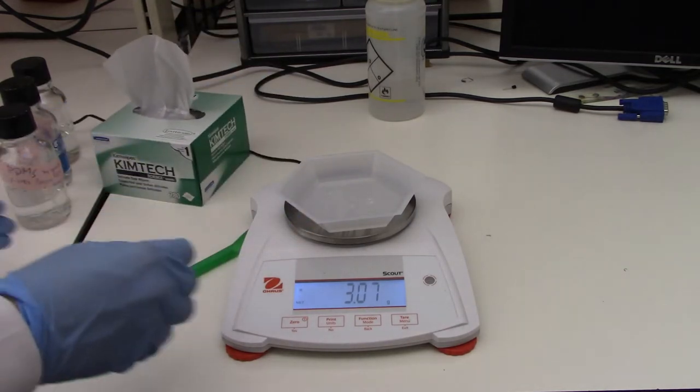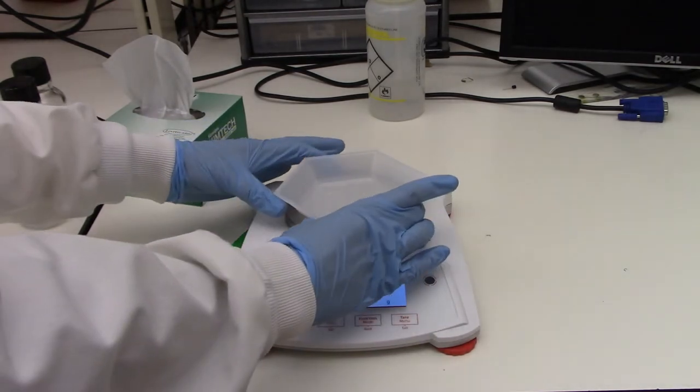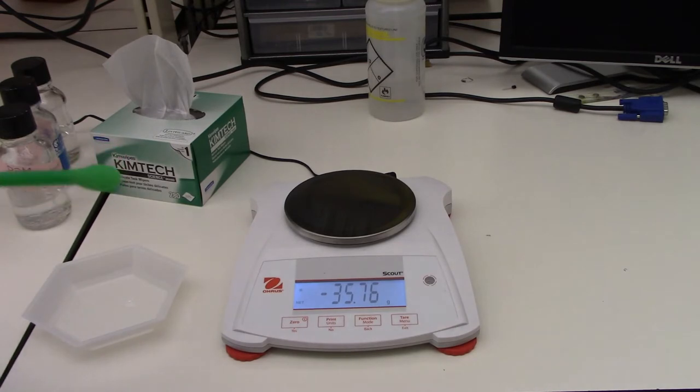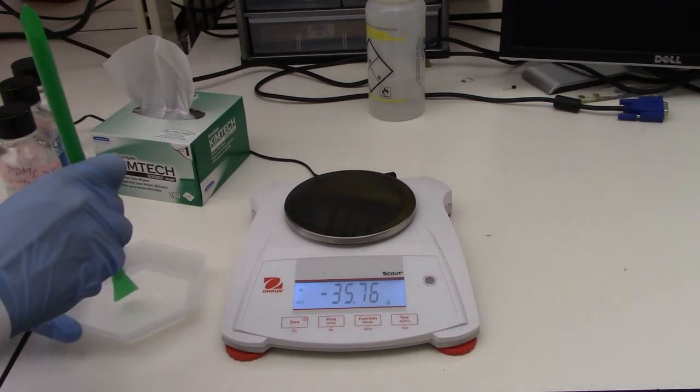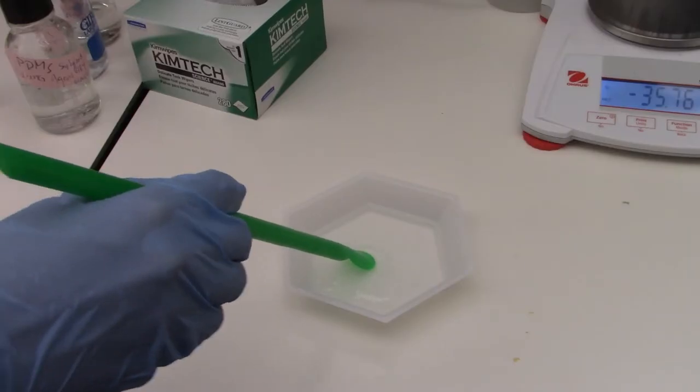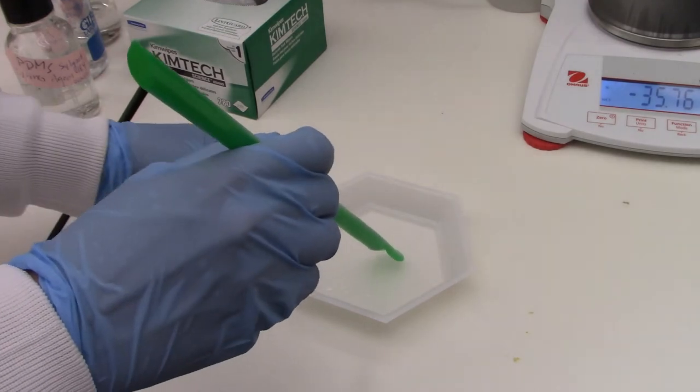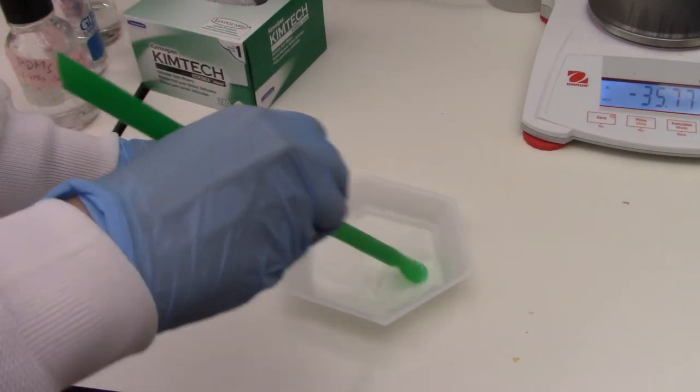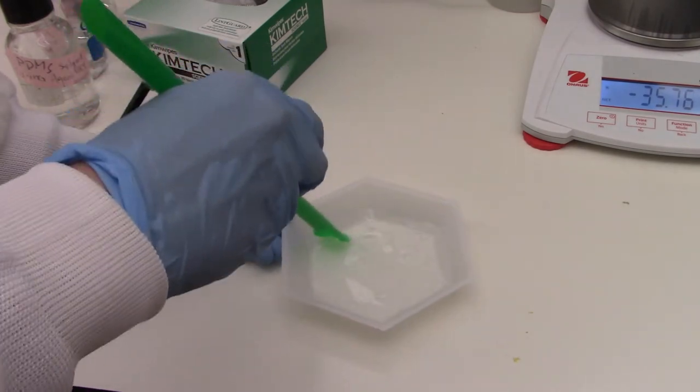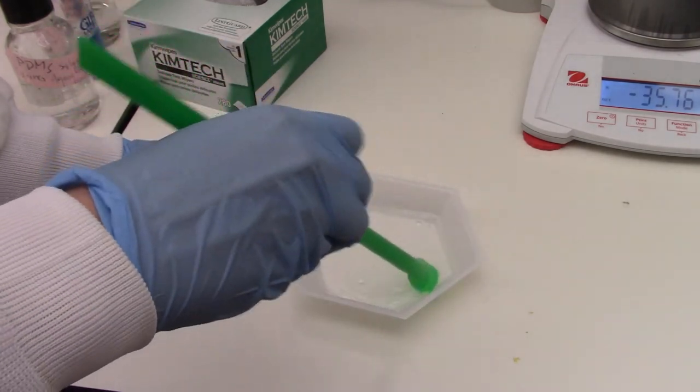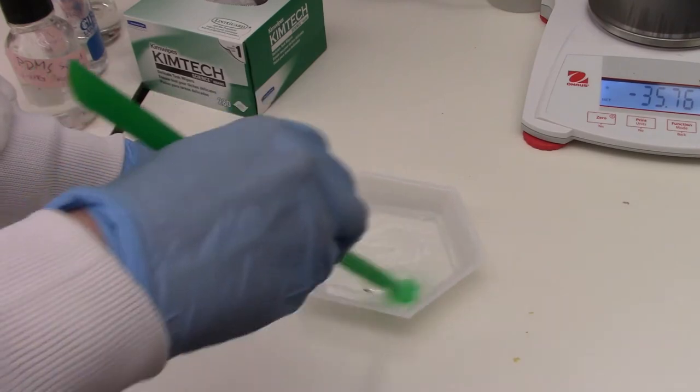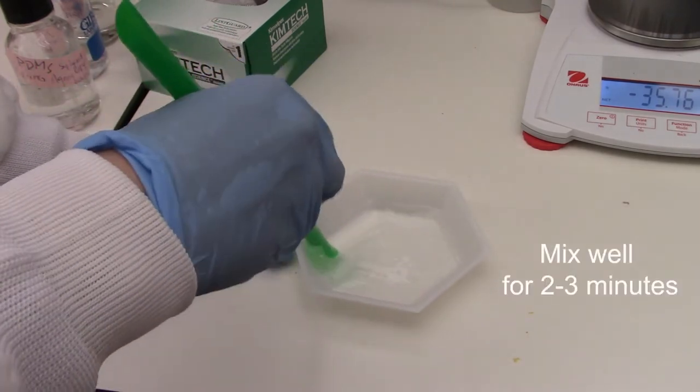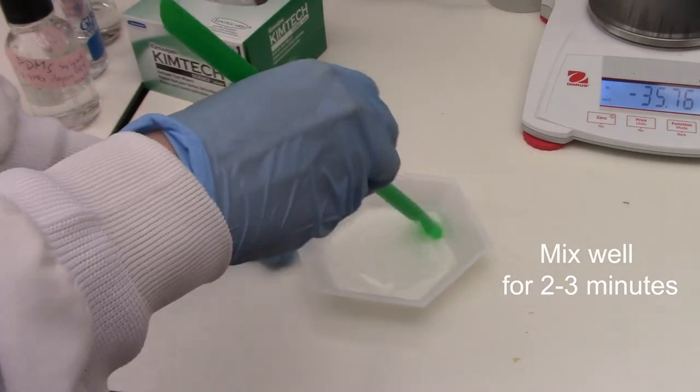So then the next step, I'm going to take, we've got our PDMS base and curing agent. So I'm going to take this off the balance and then rigorously mix. Now we're going to mix our base and curing agents together. So mix somewhat rigorously, but also for at least a minute or two. Basically, the goal is to make sure that these two components are mixed very well. Otherwise we'll have problems later in our manufacturing.